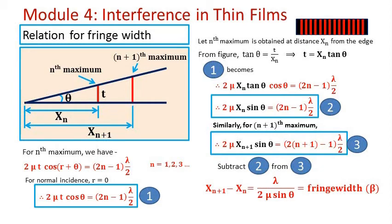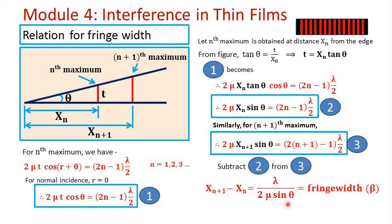Fringe width can be obtained by subtracting equation 2 from equation 3, because fringe width is xn+1 minus xn — the distance between the centers of two consecutive bright bands. These are the two consecutive bright bands obtained at distances xn and xn+1 from the edges. Subtracting equation 2 from equation 3, the 2n terms cancel on the right side, and lambda by 2 plus lambda by 2 gives lambda. Taking 2 mu sin theta to the other side, we get xn+1 minus xn equal to lambda upon 2 mu sin theta. So the fringe width is lambda upon 2 mu sin theta.